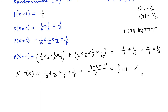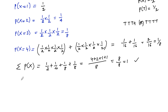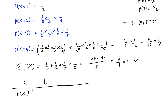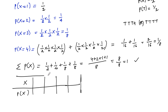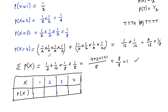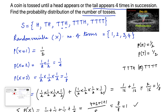So the probability distribution table has random variable X with values 1, 2, 3, 4, and corresponding probabilities P(X) of 1/2, 1/4, 1/8, and 1/8 respectively. This is the probability distribution for the given random variable — the number of tosses.